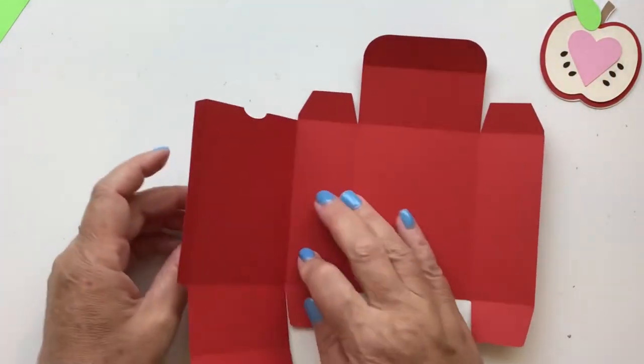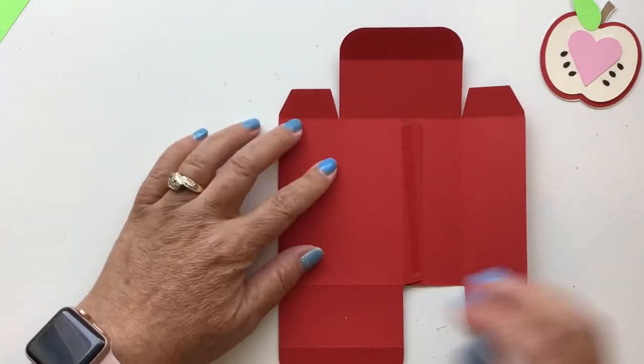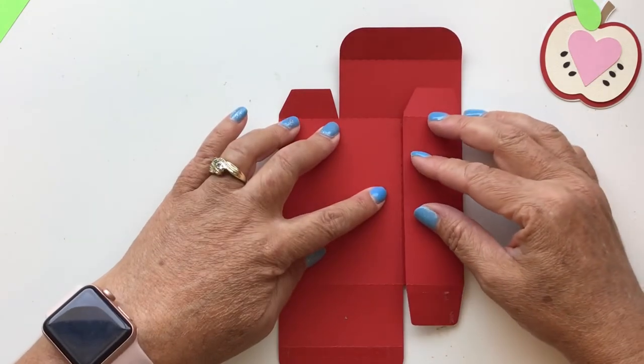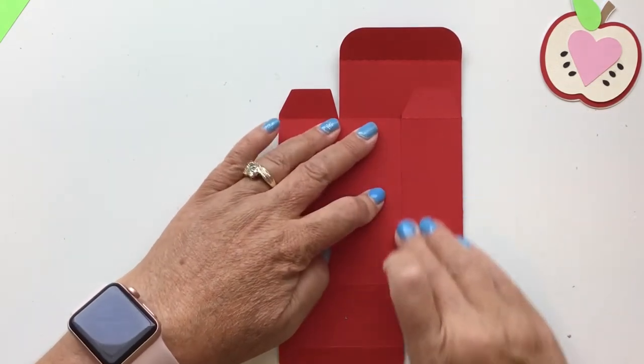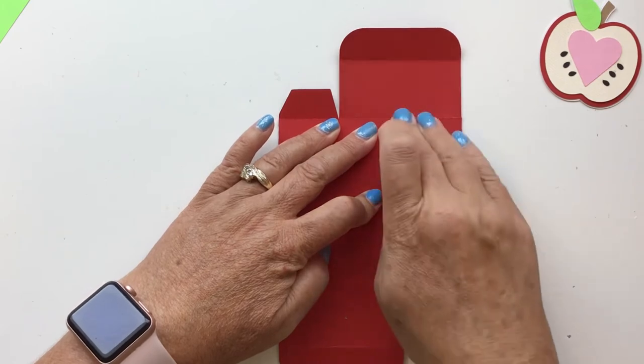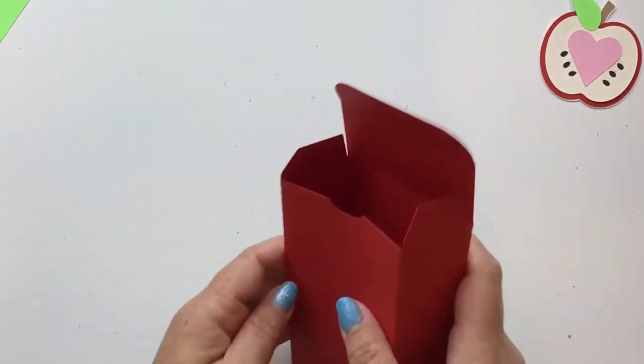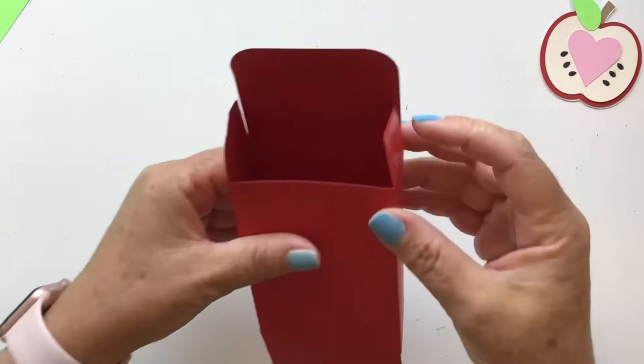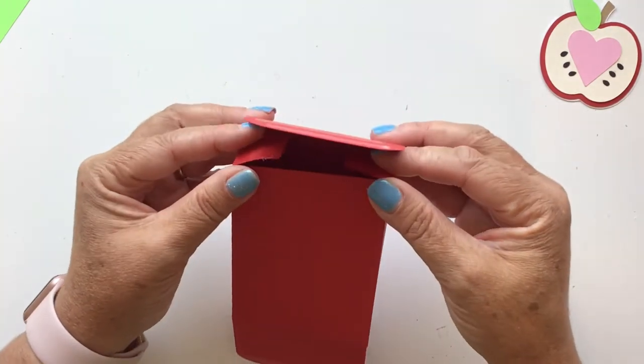Once you've got your glue on your tabs, not your top tabs, we're going to turn it over. Then we're just going to fold it like this and then fold this side over to match those score lines and press it.